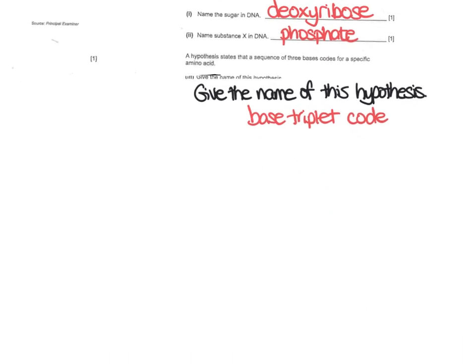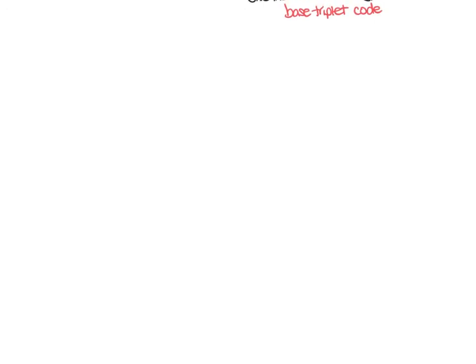Now underneath that, name the sugar - ribose is a type of sugar, but the name is deoxyribose. Everybody got phosphate. The bottom bit caught a few people out - this is the actual name, it's the base triplet code, and that's what you need to put down if you're asked for that hypothesis where three bases code for a particular amino acid.